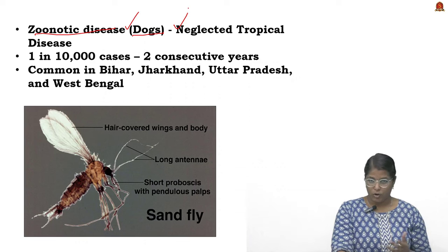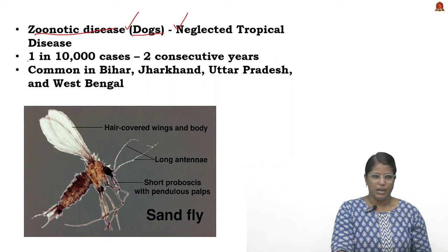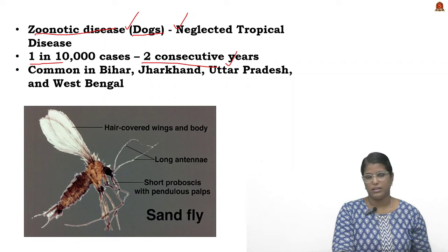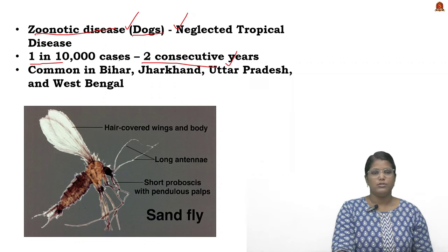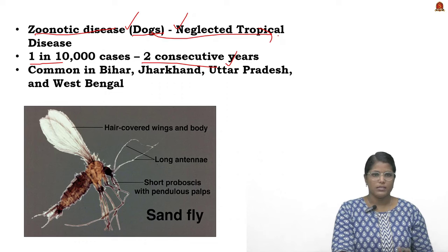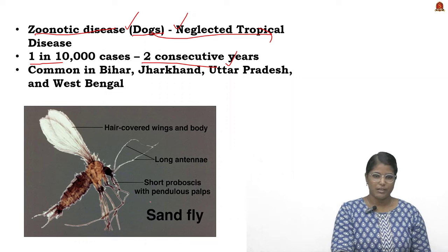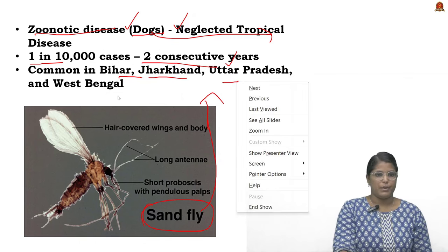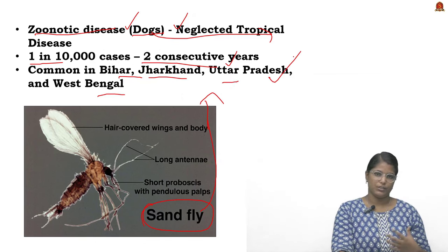In India, we have recorded fewer than 1 case in 10,000 cases consecutively for two years — this is the reason India has asked WHO for certification that it is Kala Azar free. The pathogen is transmitted by a species called sandfly. Sandflies are common in districts of Bihar, Jharkhand, Uttar Pradesh, and West Bengal due to temperature, humidity, and moist nutrient-rich soil where they breed.